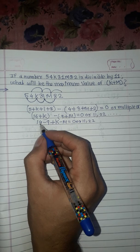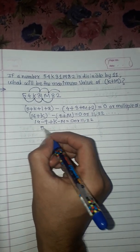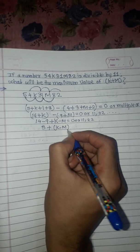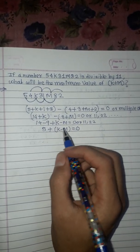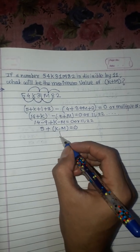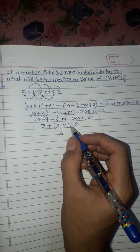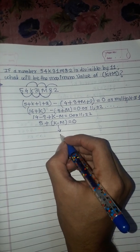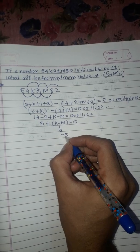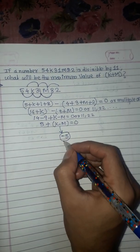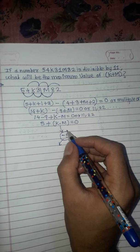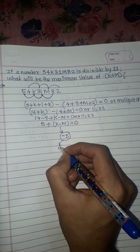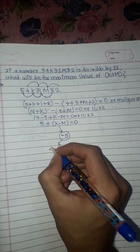To get -5, we need k - m = -5. Since m should be greater than k, and -5 = 4 - 9, the values are k = 4 and m = 9.